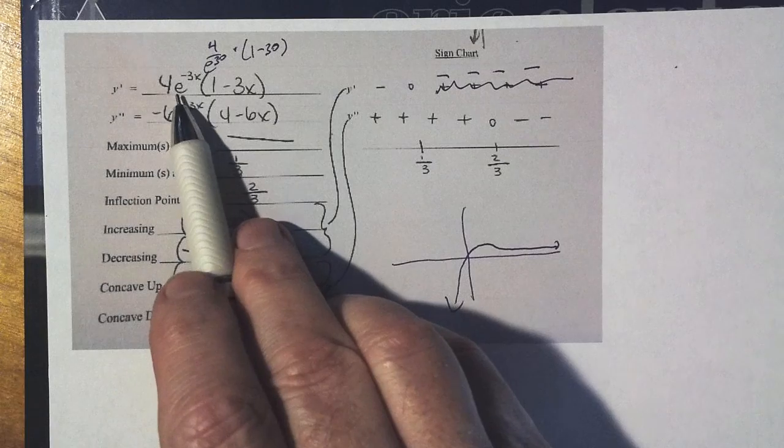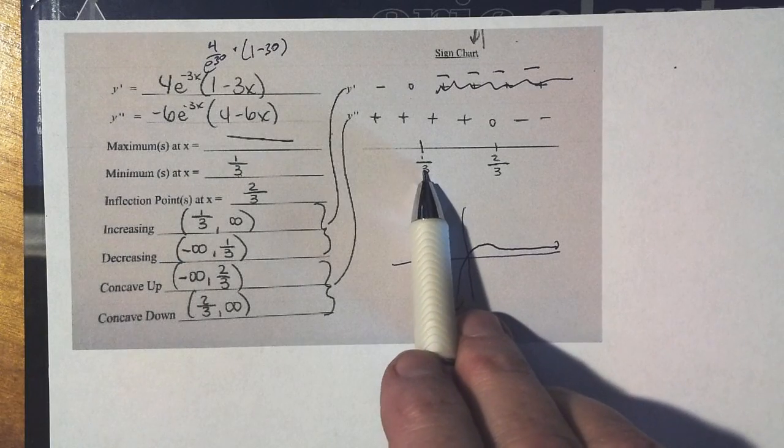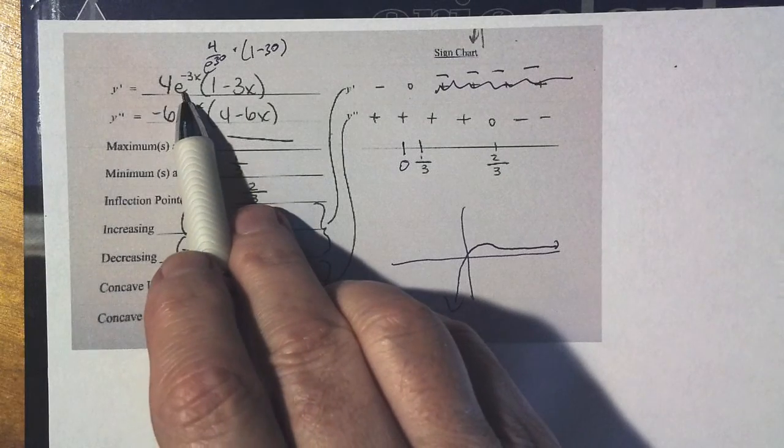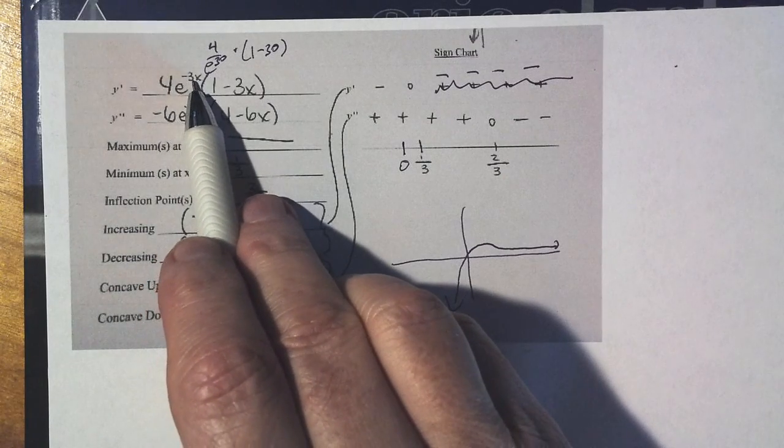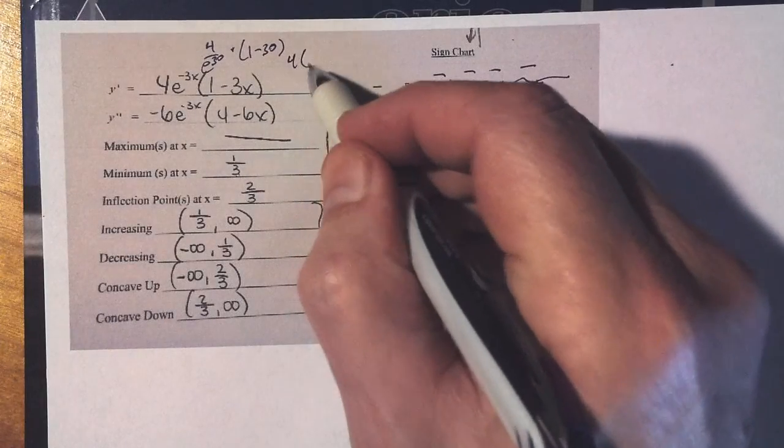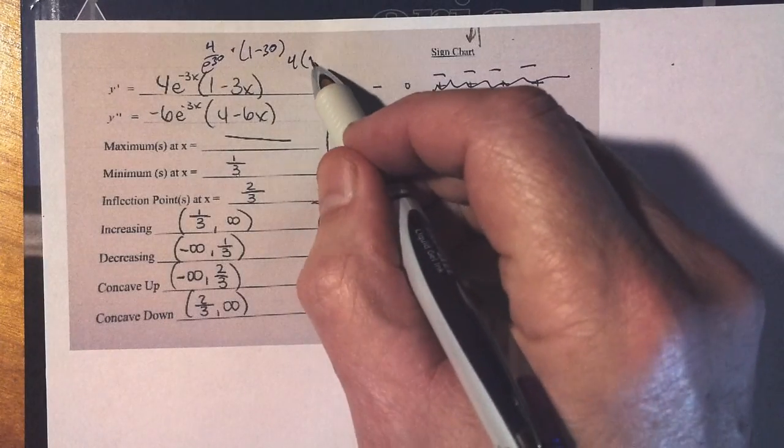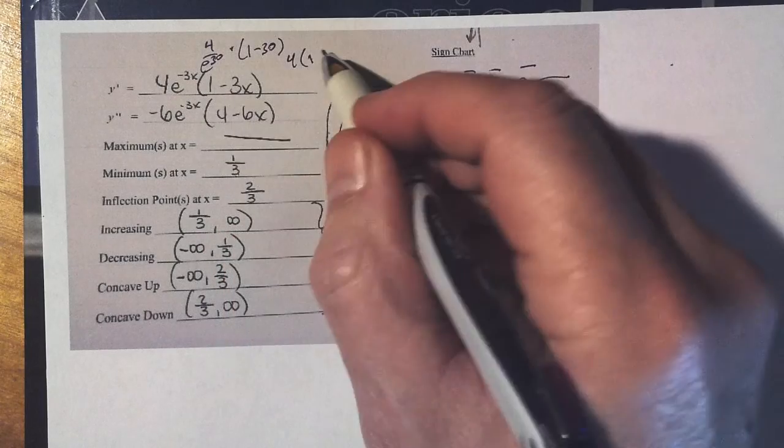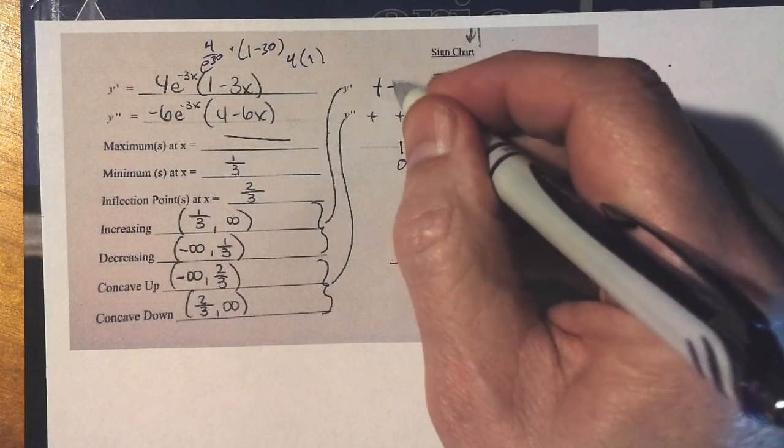And now if I put a big negative in here, or just anything to the left of one-third, for instance zero. If I put zero in here, this becomes 4 times e to the zeroth. e to the zeroth is 1. This becomes 4 times 1 minus 3 times 0. That's 1 minus 0, 1. We're actually positive to the right.